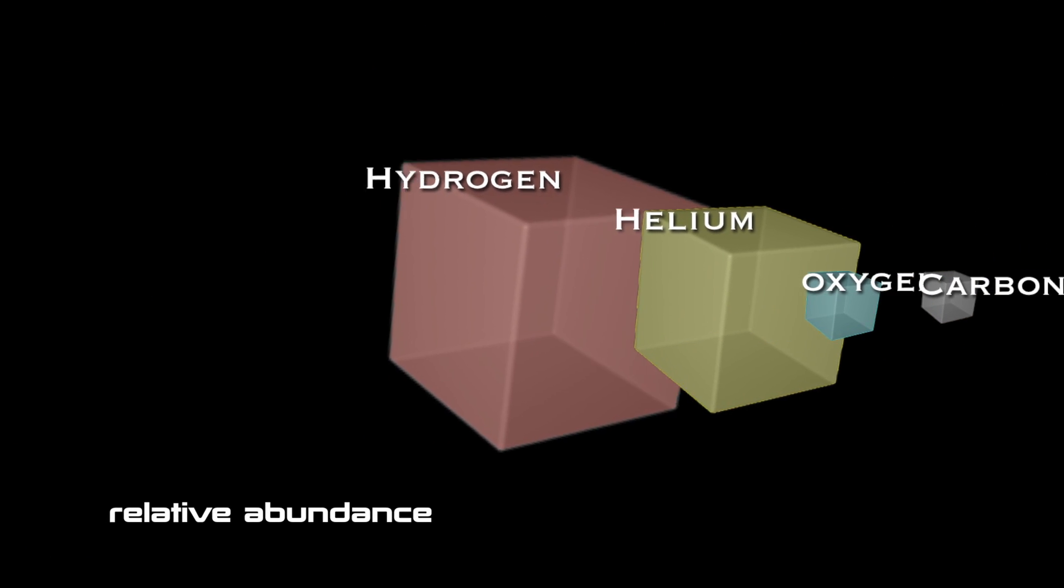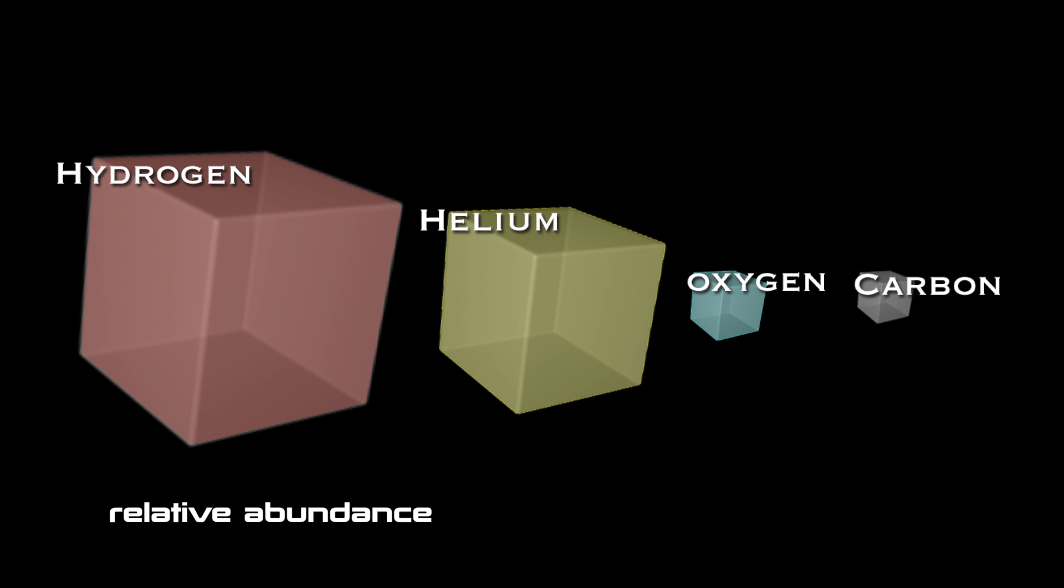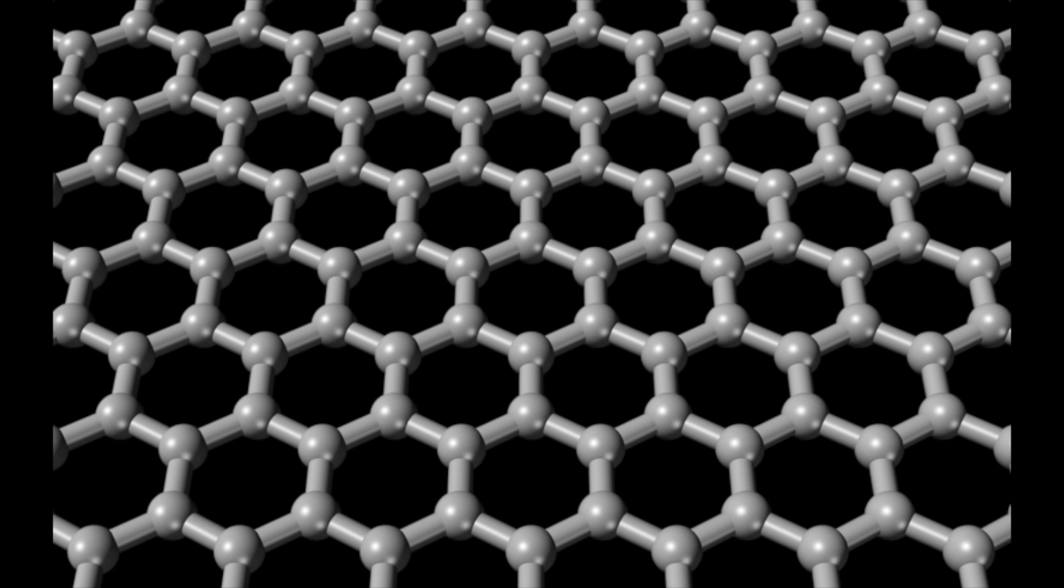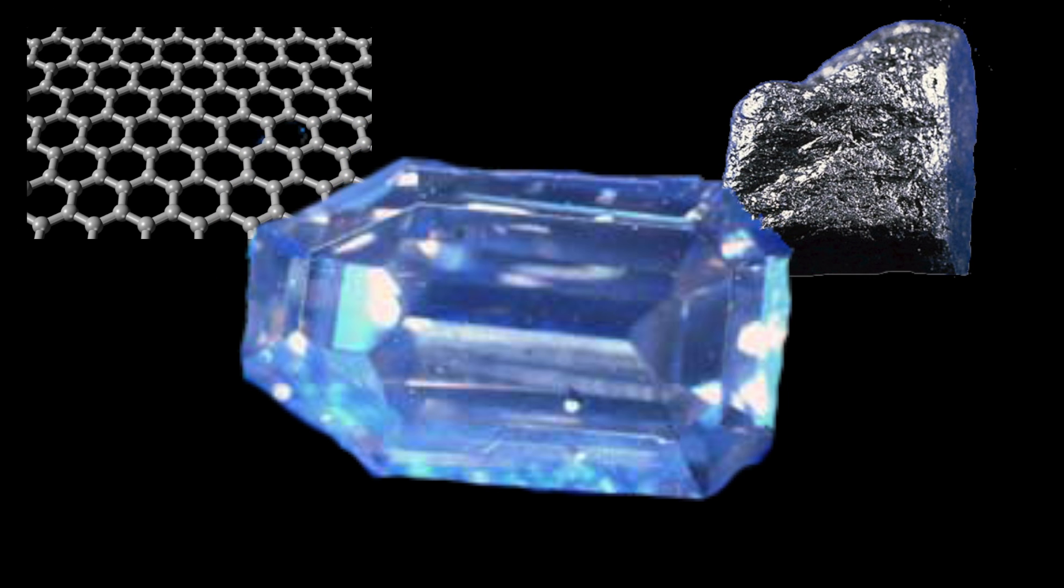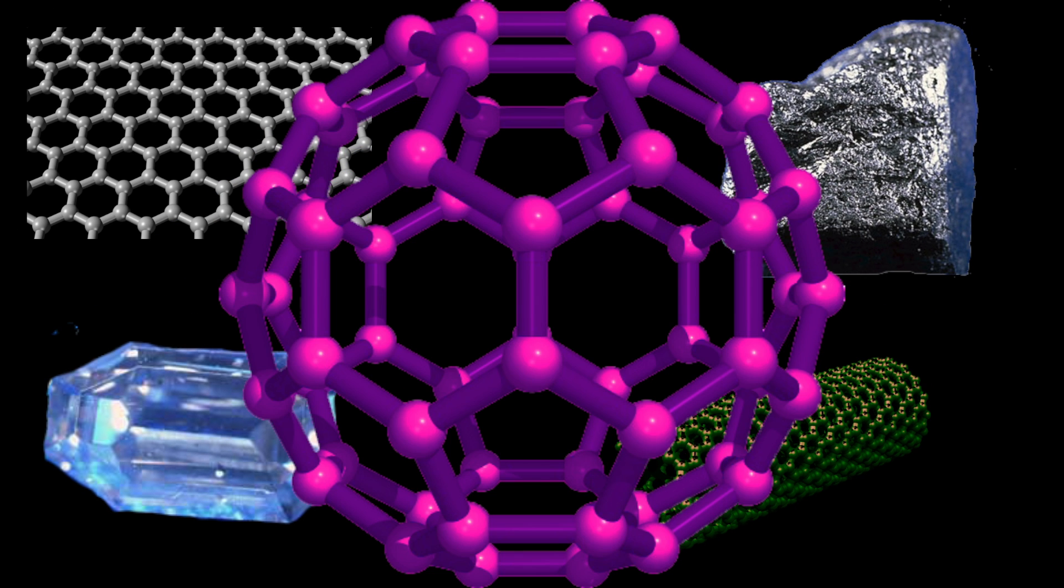Carbon is the fourth most abundant element in the universe and takes on a wide variety of forms: the honeycomb-like graphene, the pencil lead graphite, diamond, cylindrically structured nanotubes, and hollow spheres called fullerenes.